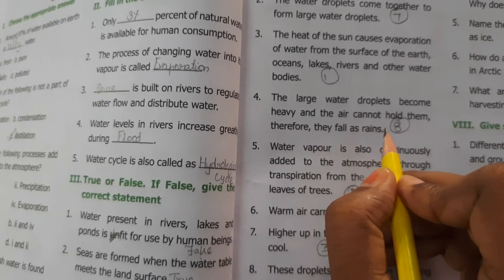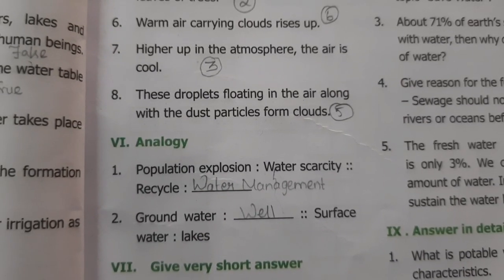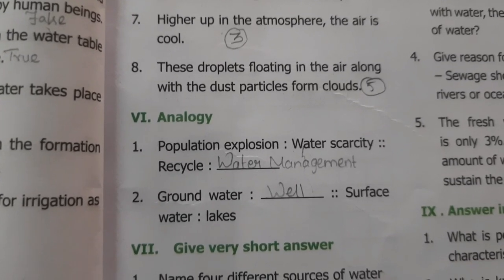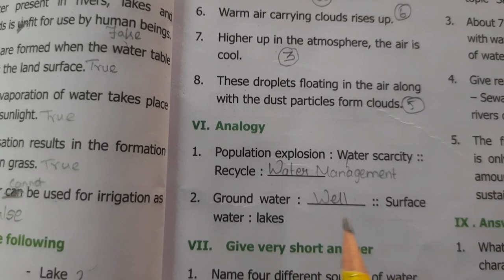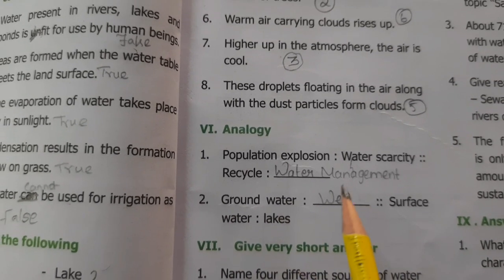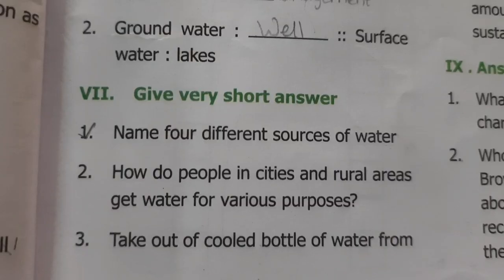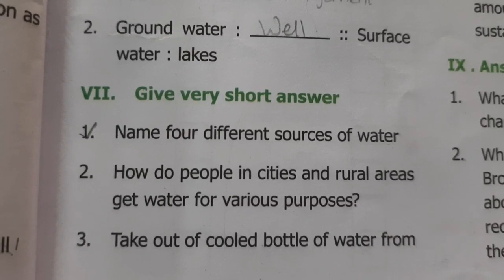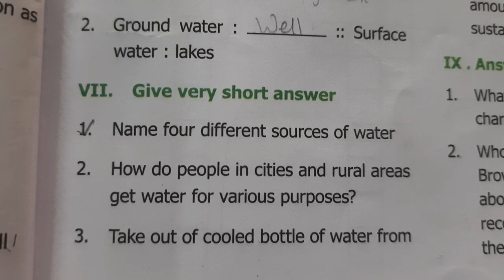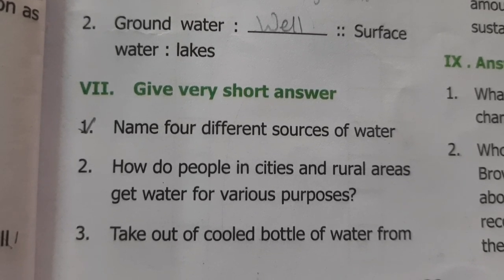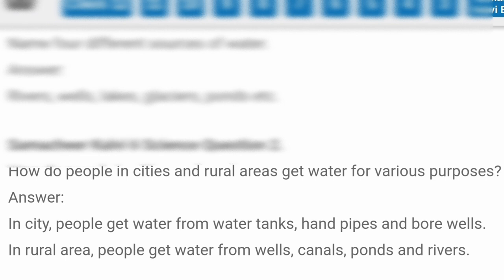Very short answers. First question: name four different sources of water. Answer: rivers, wells, lakes, glaciers, ponds, etc.